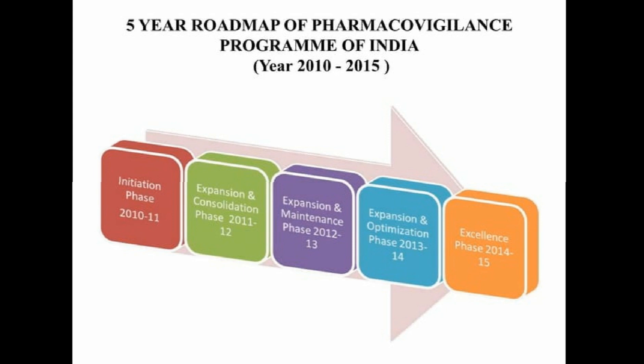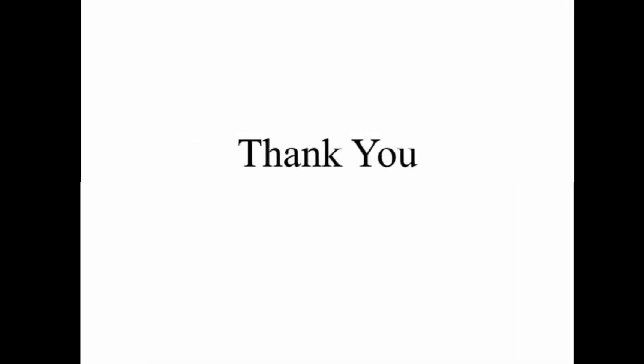Now coming to the five-year road map of the Pharmacovigilance Programme of India from 2010 to 2015. From 2010 to 2011, the initiation phase started. From 2011 to 2012, the expansion and consolidation phase started. From 2012 to 2013, the expansion and maintenance phase started. From 2013 to 2014, pharmacovigilance went into the expansion and optimization phase. By the year 2015, pharmacovigilance achieved excellence. This concludes today's session covering complete chapter one from unit one. In the next lecture, we will start the introduction to adverse drug reactions. Take care and bye bye.